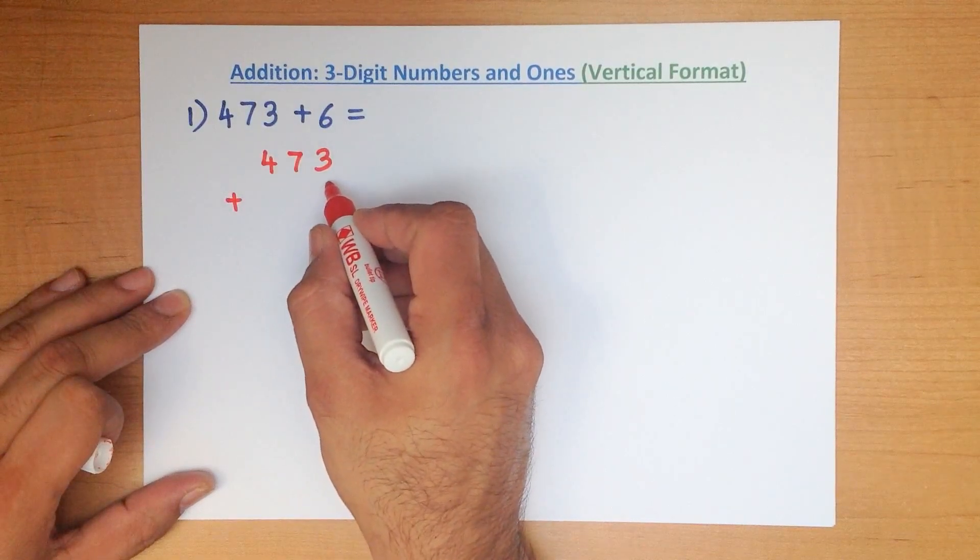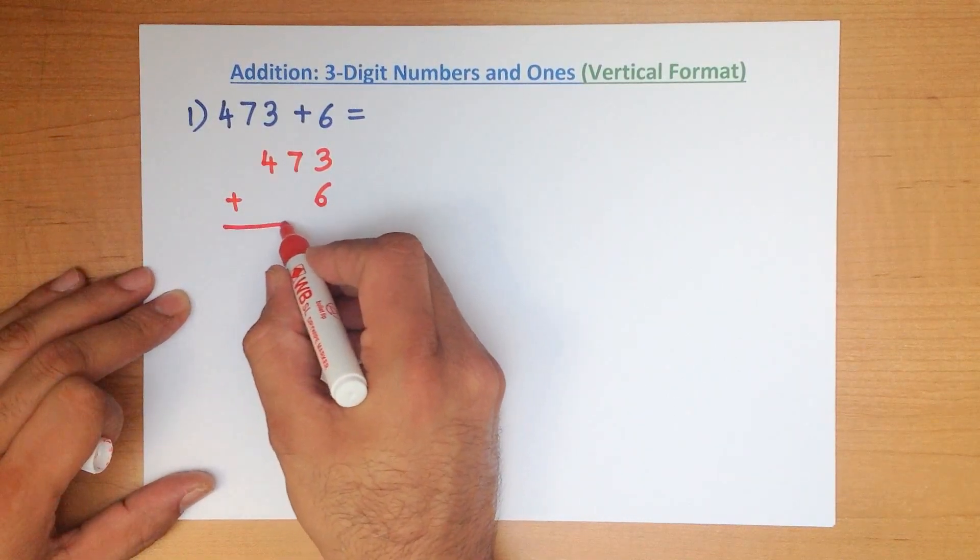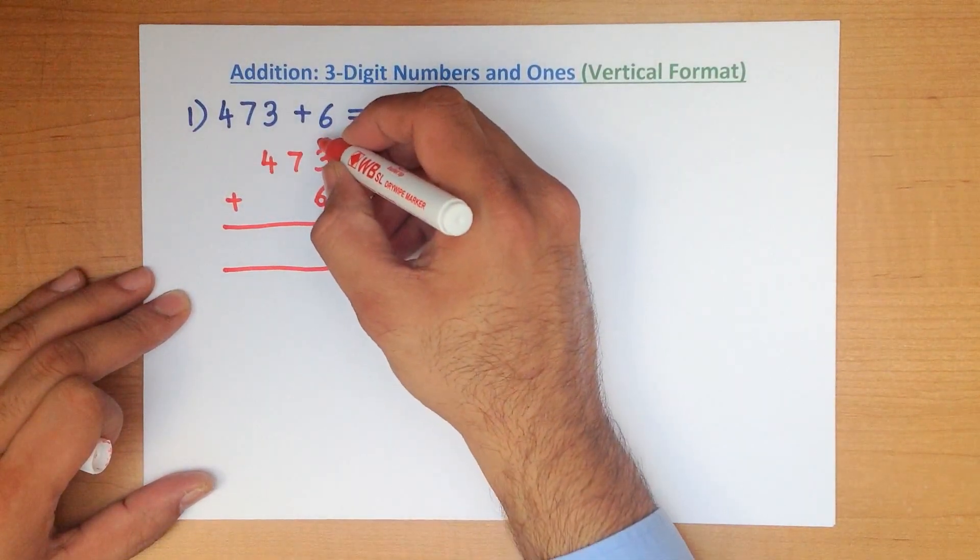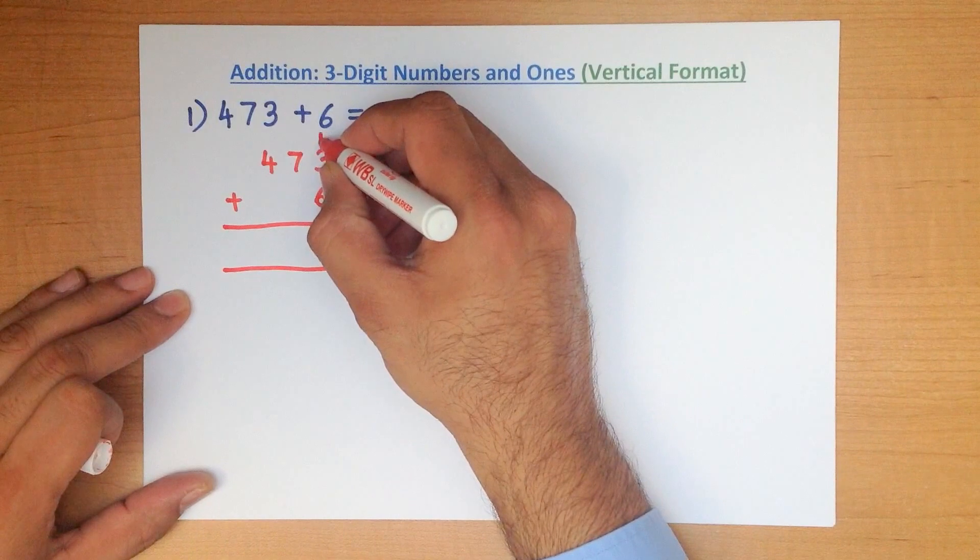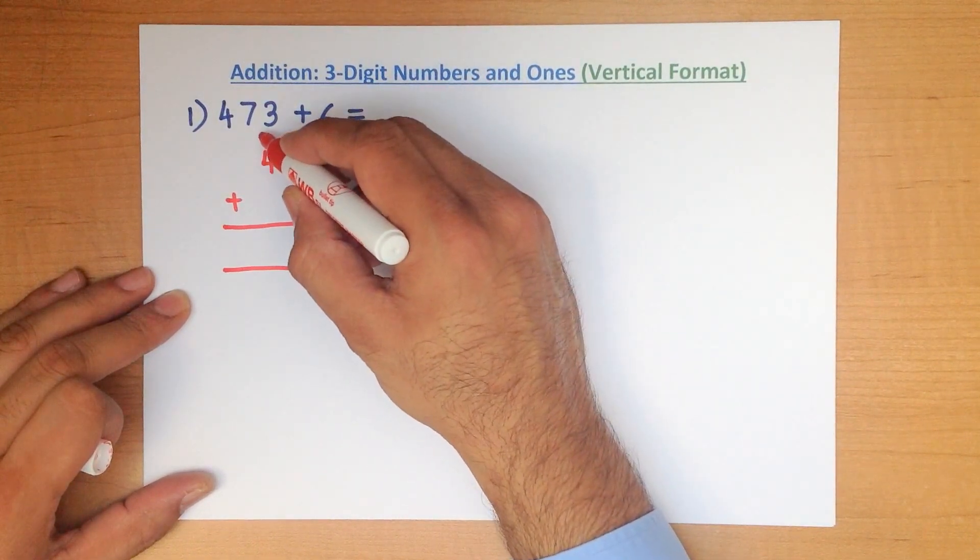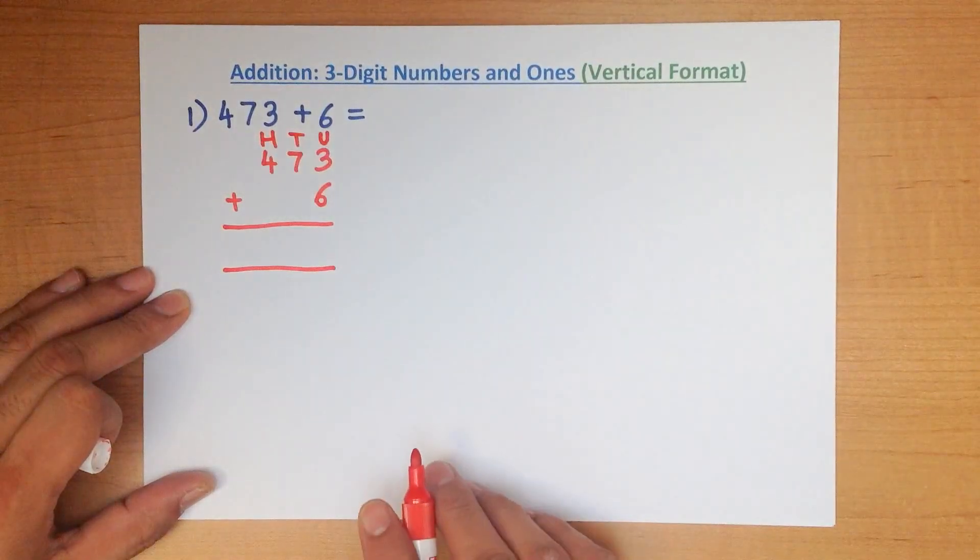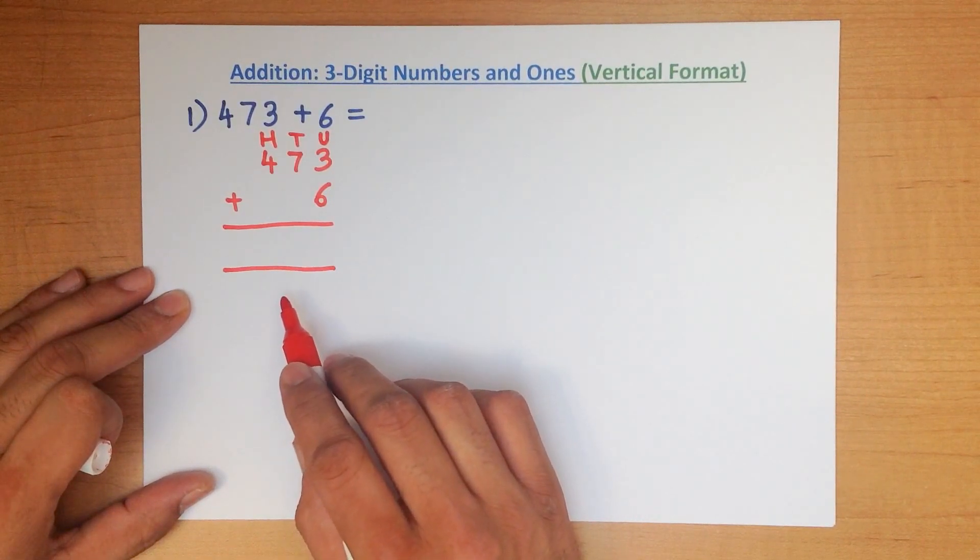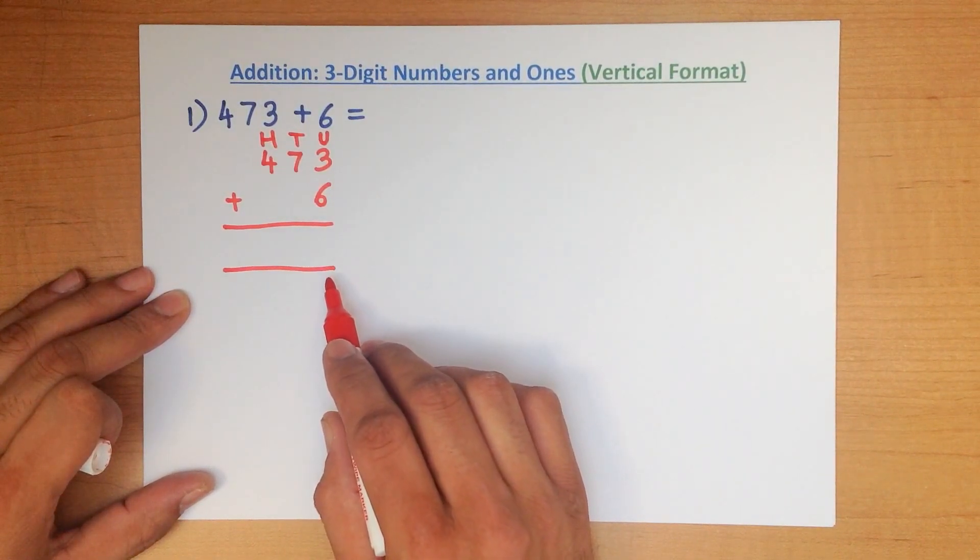473 plus 6. We can label the columns. We don't have to, but we can. The first one is units, tens, and hundreds. And as with all cases of the vertical format, the first thing we do is we add the column on the right-hand side first.